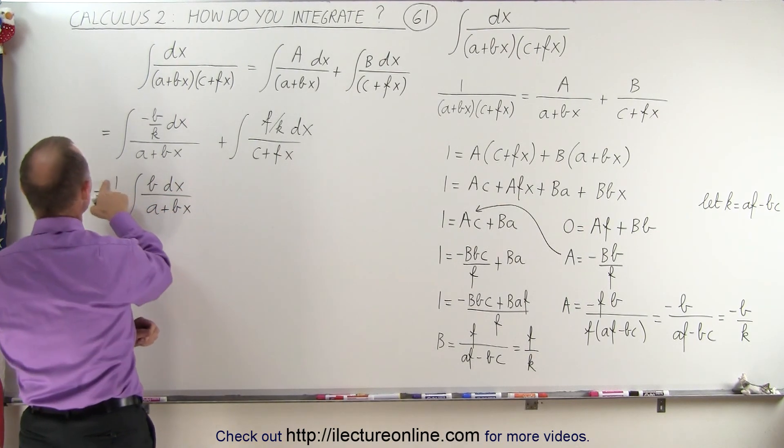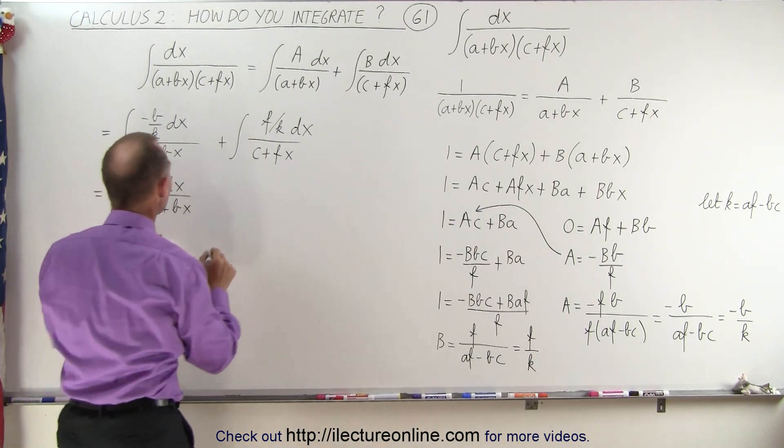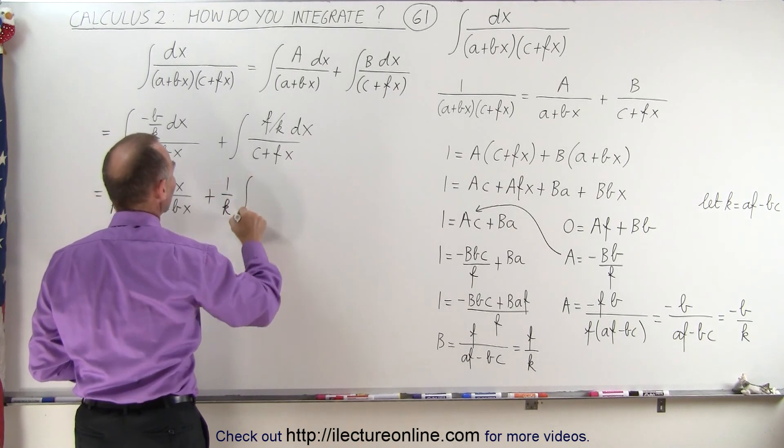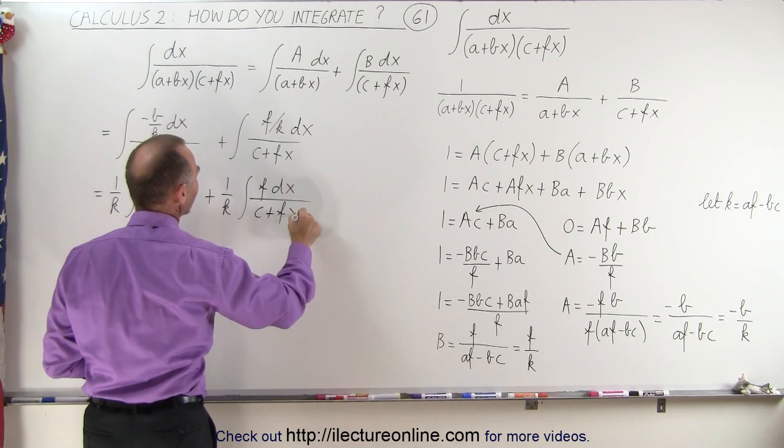You know what? I think I'll leave the negative inside, and you'll see in a moment why I did that. I'll leave that inside. And then plus 1 over k times the integral of f dx divided by (c + fx).